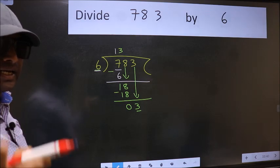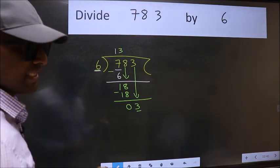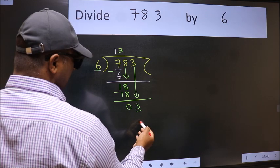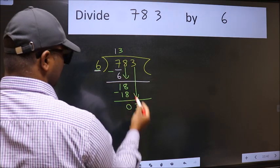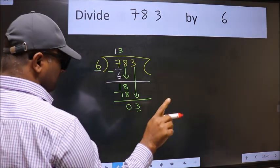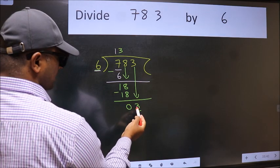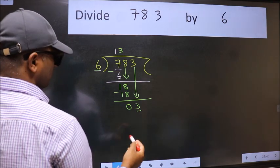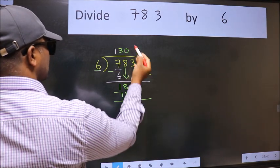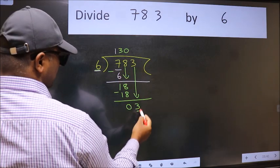Instead of that, what you should think of doing is which number should we take here. If I take 1, we will get 6. But 6 is larger than 3. So what we do is we take 0. So 6 into 0, 0.